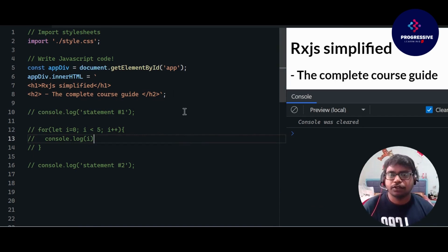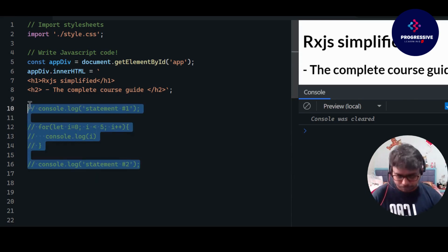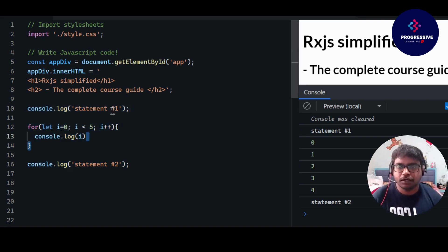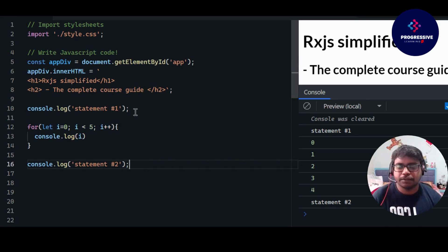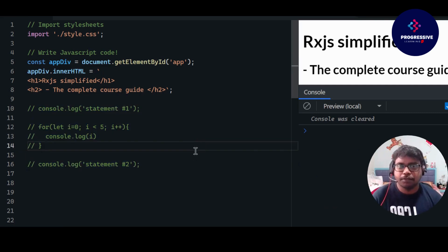Let's jump into a practical demo. I'm using Stackblitz, an open-source tool you can use directly in your browser to execute JavaScript. I'll provide the URL in the comments and description so you can fork it and continue working. Here we have three statements: statement one, a for loop, and statement two. This is synchronous JavaScript — the for loop must complete before statement two executes. Statement one continues, the for loop runs, and then statement two executes.